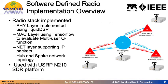Here we outline the implementation of our software-defined radio stack, used to collect over-the-air results of our trained dynamic spectrum access model. The radio stack consisted of a physical layer implemented using liquid DSP, a signal processing library in C. Our MAC layer used TensorFlow to evaluate the dynamic spectrum access Q functions, and the network layer was implemented to support IP packets. We used a hub-and-spoke network topology so that the hub could send acknowledgement transmissions back to each of the spoke nodes, which were evaluating the trained dynamic spectrum access model.